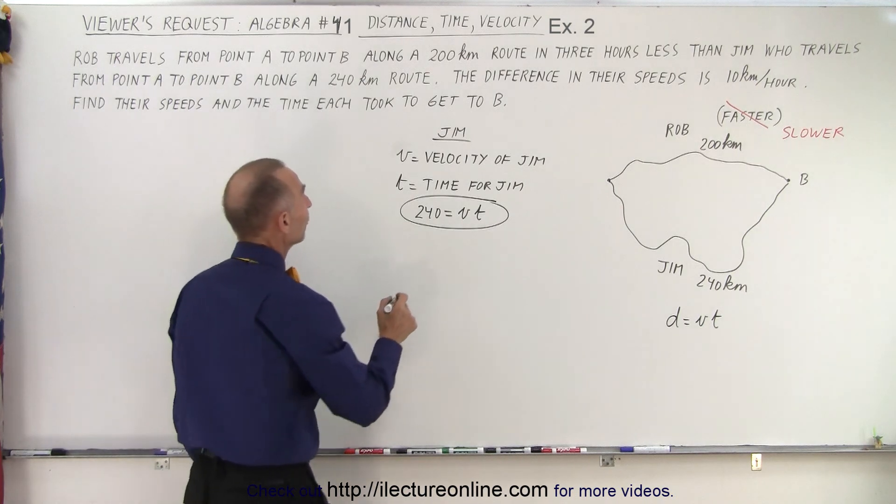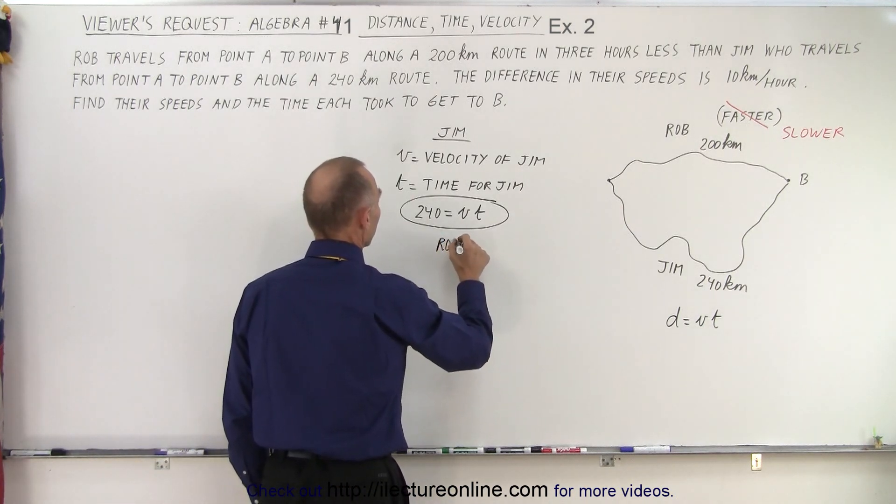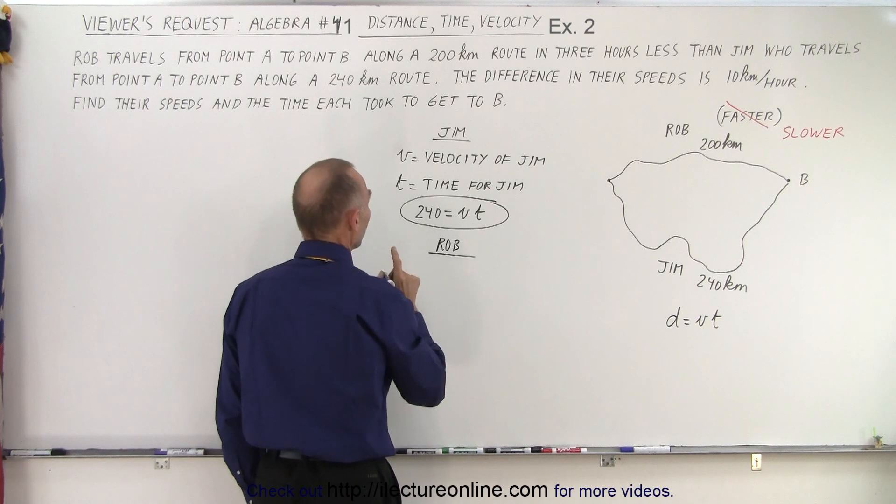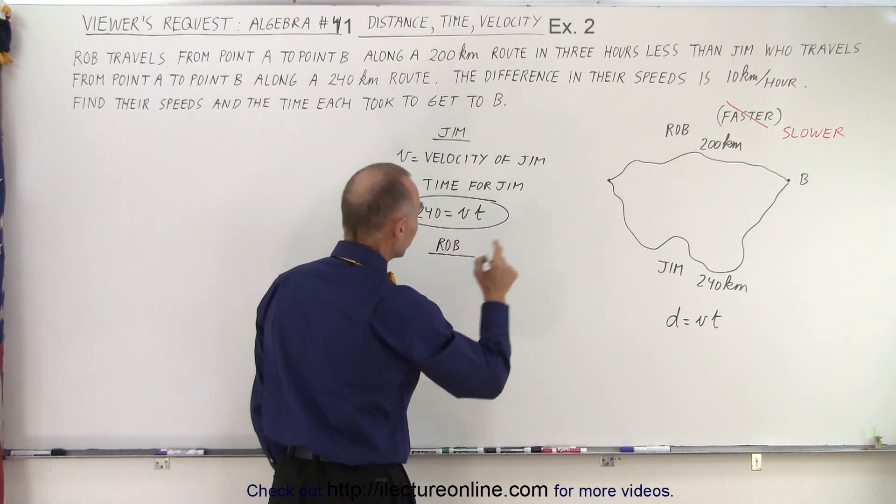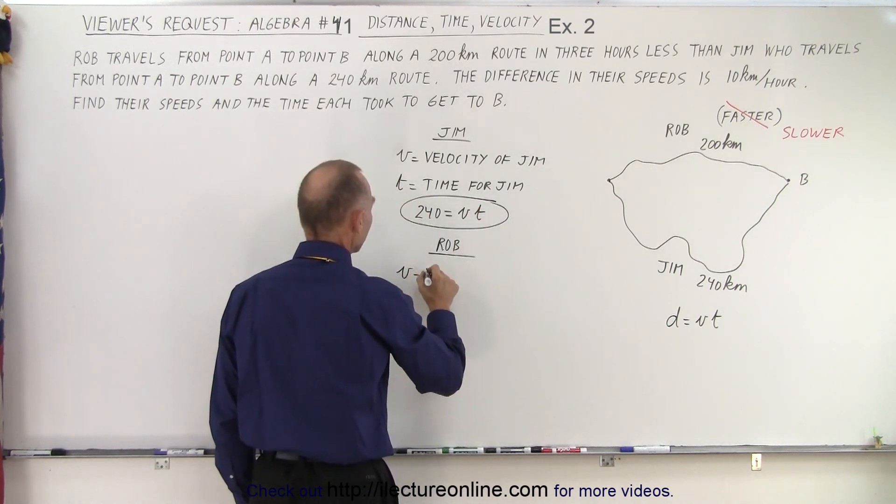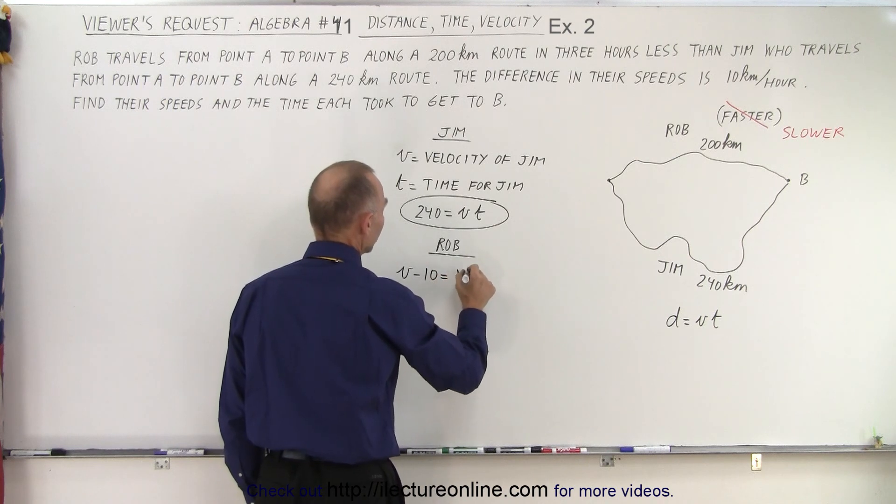Now we're going to define Rob. And so Rob is now the slower one, so we have to write that V minus 10 is equal to the velocity of Rob.